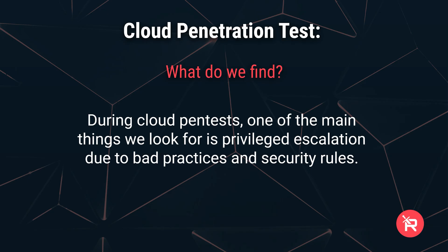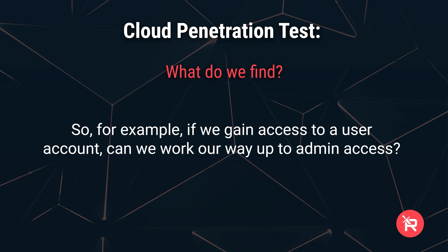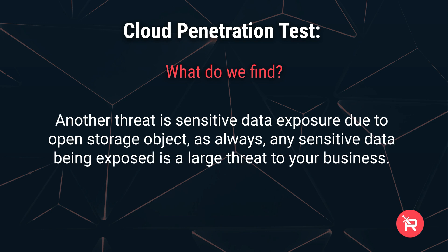What do we find? During cloud pen tests, one of the main things we look for is privileged escalation due to bad practices and security rules. For example, if we gain access to a user account, can we work our way up to admin access? Another threat is sensitive data exposure due to open storage objects. Any sensitive data being exposed is a large threat to your business.